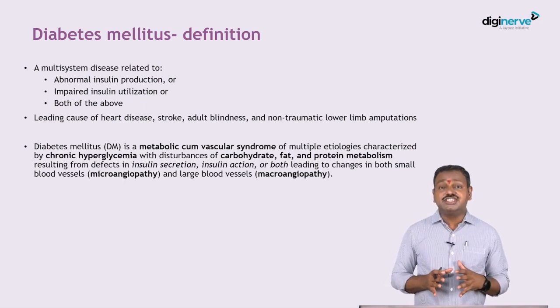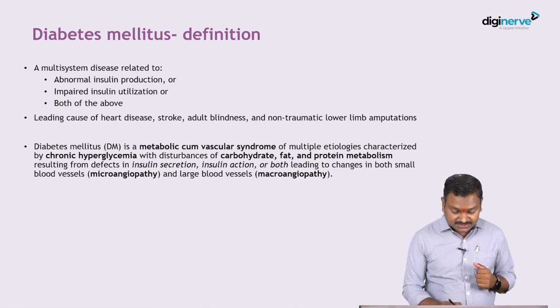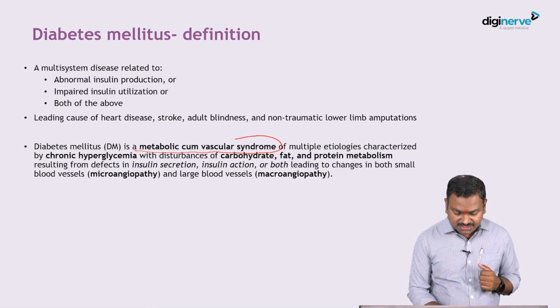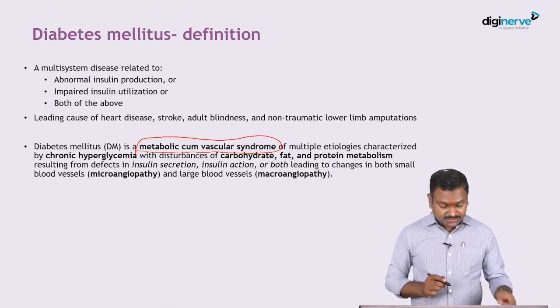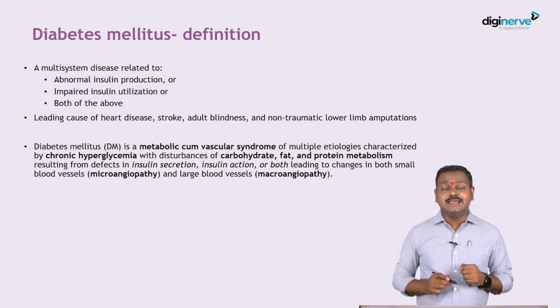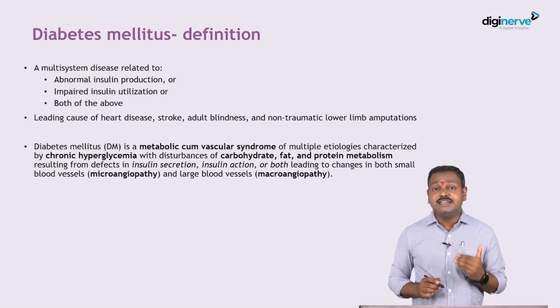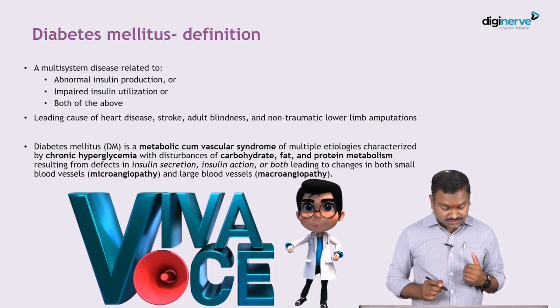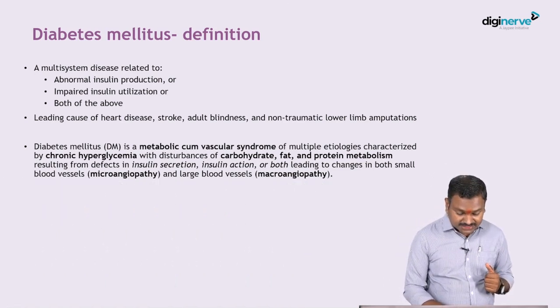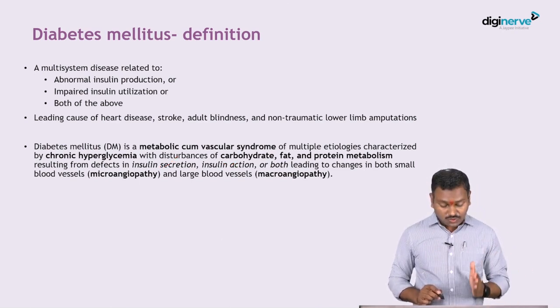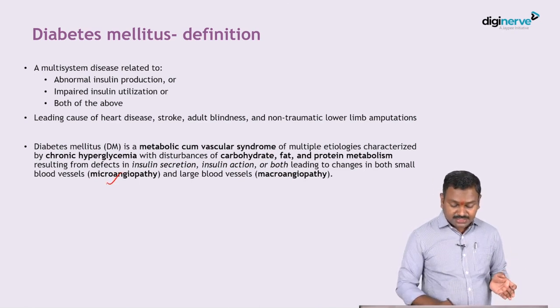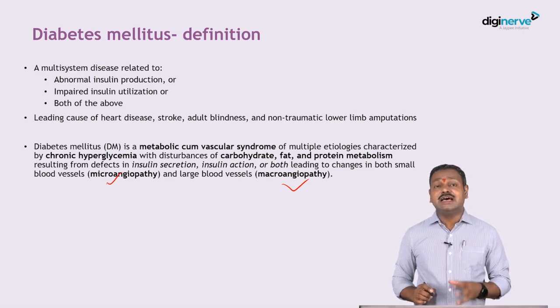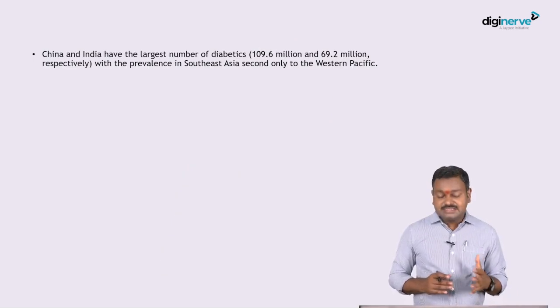The new definition of diabetes mellitus describes it as a metabolic vascular disease — it's not only a metabolic disease, it has a significant vascular component. There are multiple etiologies and the basic problem is chronic hyperglycemia, which results in disturbances of carbohydrate, fat, and protein metabolism. The problem is either insulin secretion, insulin action, or both, resulting in microangiopathy and macroangiopathy, with both metabolic and vascular compromise.